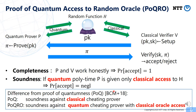However, the difference is that in PoQRO, we only require soundness against a completely classical cheating prover. On the other hand, in PoQRO, we require soundness against a quantum cheating prover with only classical oracle access. So this is the difference from PoQ.